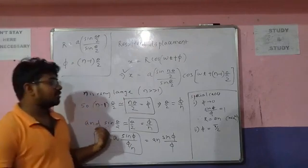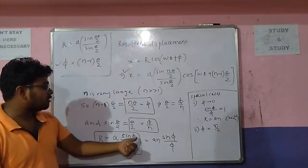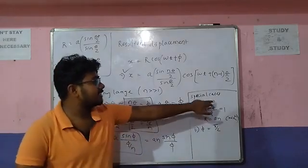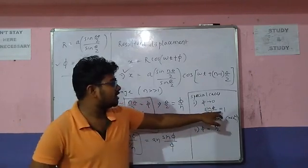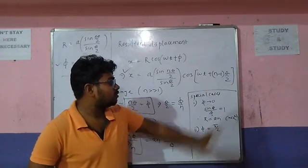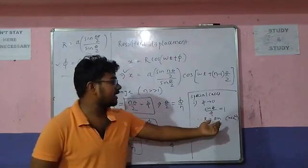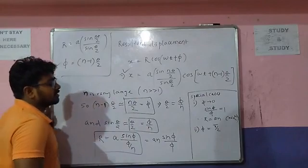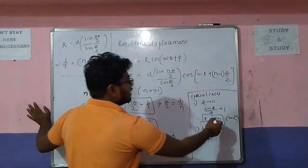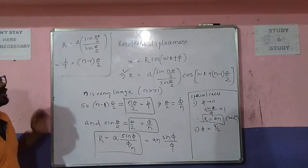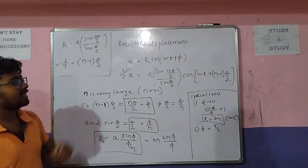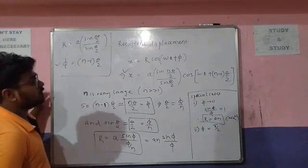The resultant amplitude for large N is R = A·N·sin(φ)/φ. Case 1: if φ tends to 0, then sin(φ)/φ approaches 1, so R = A·N. This is the maximum amplitude, where A is the amplitude of one simple harmonic motion and N is the total number of motions.